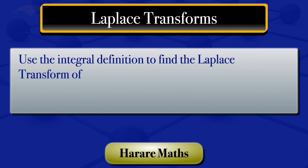In this tutorial we are going to use the definition to find the Laplace transform of f of t, which is equal to cosine of omega t.